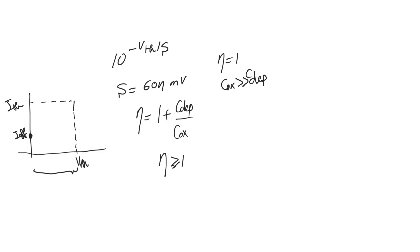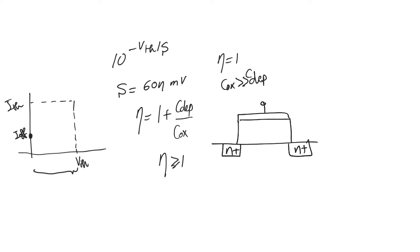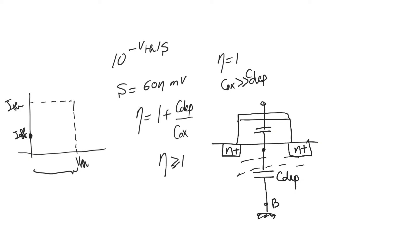Subthreshold conduction is about a battle — a war being waged between two terminals or two capacitors for control over the channel. One is C_oxide, which is trying to control the charge in the channel, and the other is C_depletion, which is trying to control it through the body. We have C_depletion capacitively coupling to the channel through the depletion zone, and C_oxide coupling through the oxide.